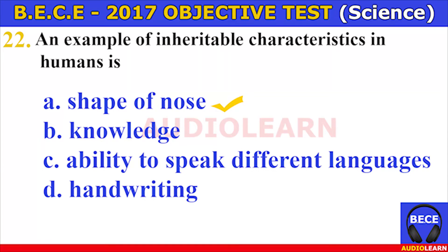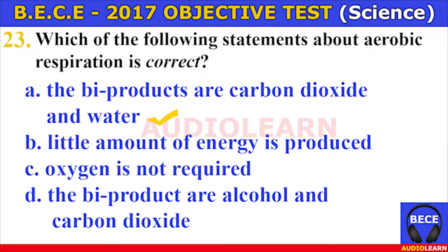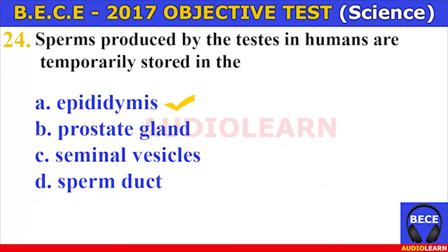Number twenty-two. An example of inheritable characteristics in humans is A. shape of nose, B. knowledge, C. ability to speak different languages, D. handwriting. The answer is A. Shape of nose. An example of inheritable characteristics in humans is shape of nose. Number twenty-three. Which of the following statements about aerobic respiration is correct? The byproducts are carbon dioxide and water.